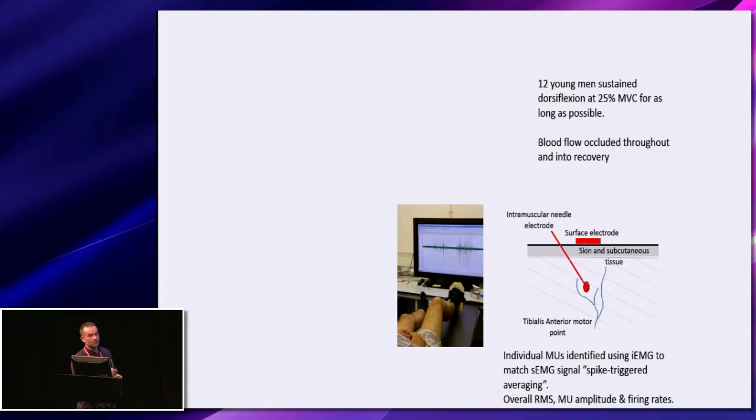Using a process called spike-triggered averaging we matched the motor unit potentials to the surface representation to get a better indication of the motor unit size. And from this you can also calculate the root mean squared, which gives a general overview of motor unit activity and firing rates as well.